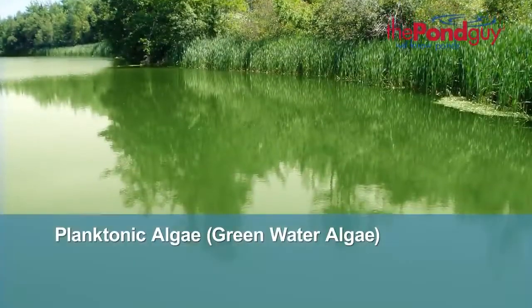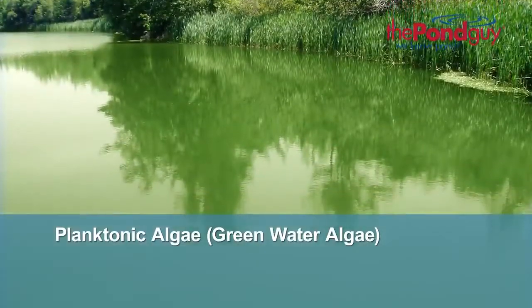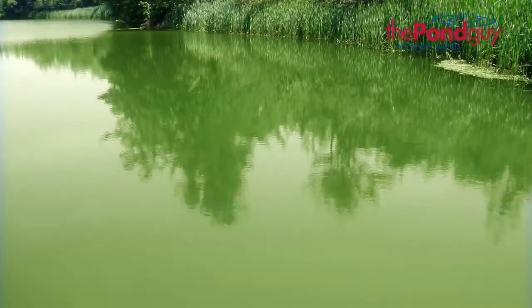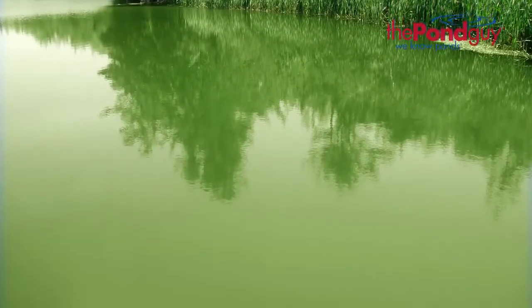Planktonic algae are floating microscopic plants that can cause pond water to turn a pea soup green color.